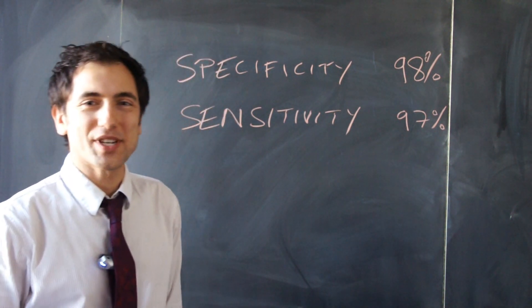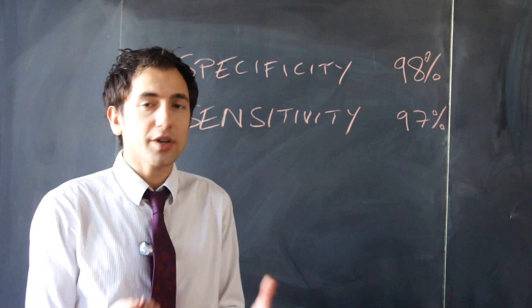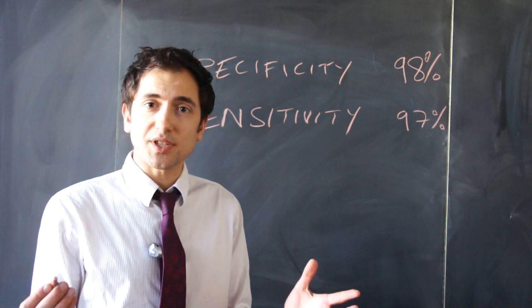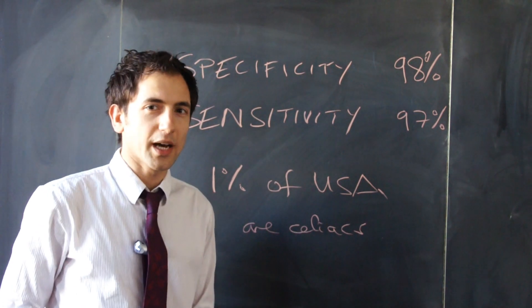There's one more piece of information we need to work with these figures, and that's to know how common celiac disease is. We can only estimate this figure, but the estimate is that 1% of the American population has celiac disease. And now we're ready to go.